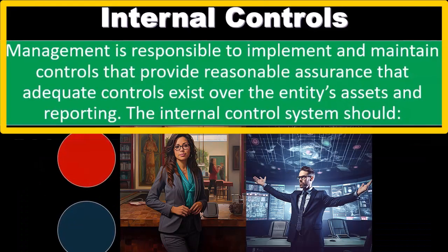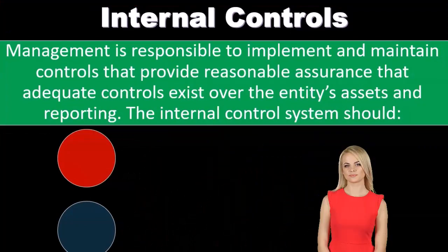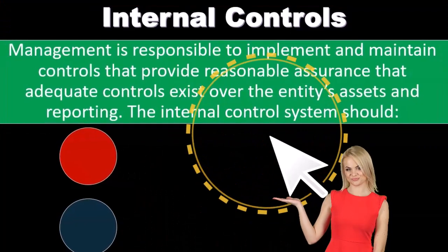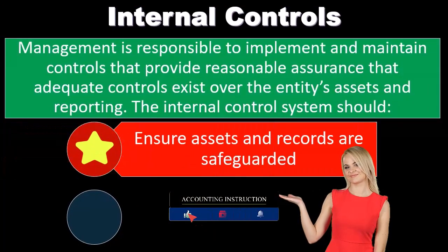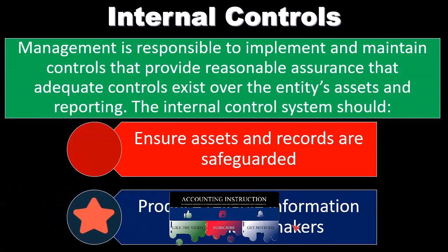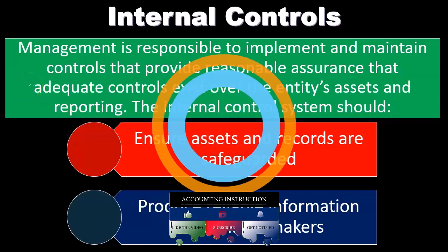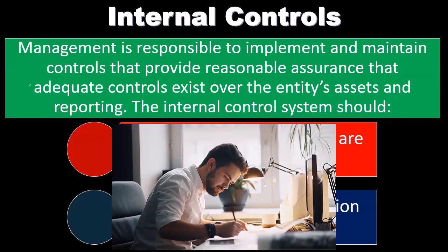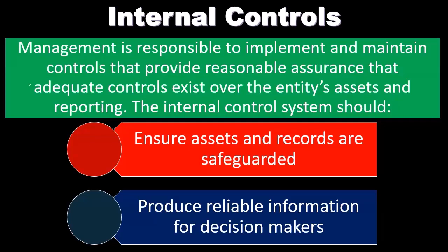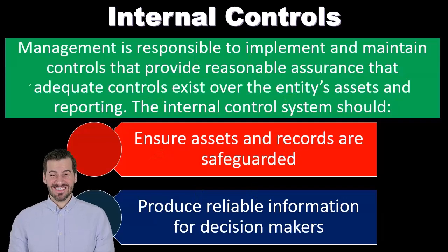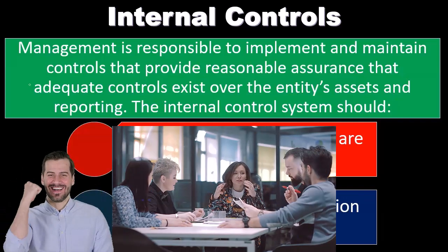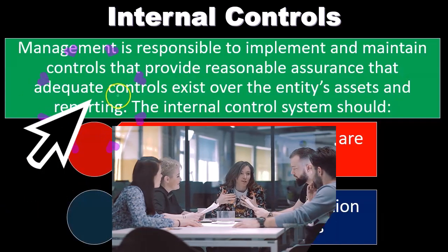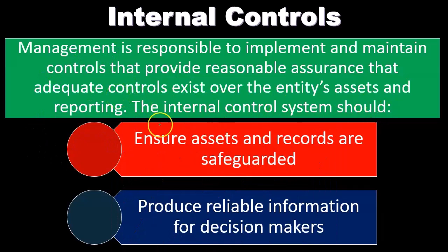It's possible to implement and maintain controls to provide reasonable assurance that adequate controls exist over the entity's assets and reporting. The internal control system should ensure assets and records are safeguarded and produce reliable information for decision makers. Note that the internal controls are something that is done by management — just like the financial statements, which are also prepared by management. The internal control system is designed and implemented by management in order to provide reasonable assurance that adequate controls exist over the entity's assets and reporting.